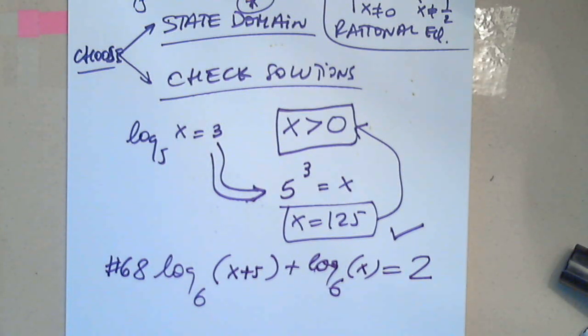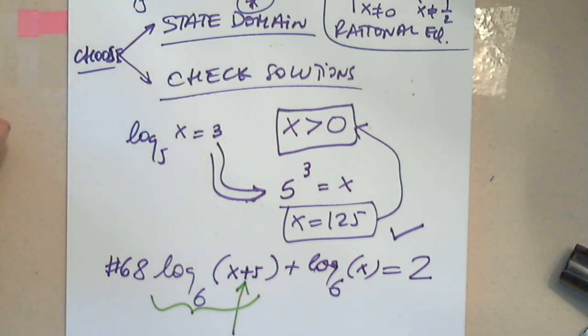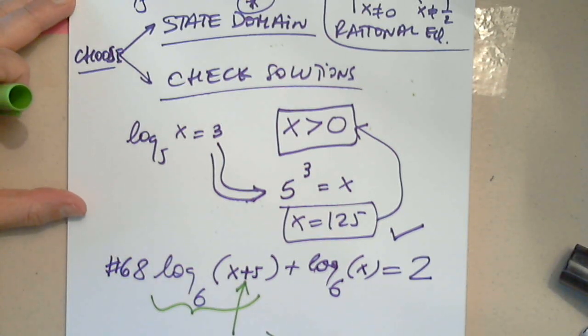I'm still using the first method, which forces me to write that x plus 5 is what type of number? What should it be? Definitely greater than 0, and the same thing here, x must be greater than 0.